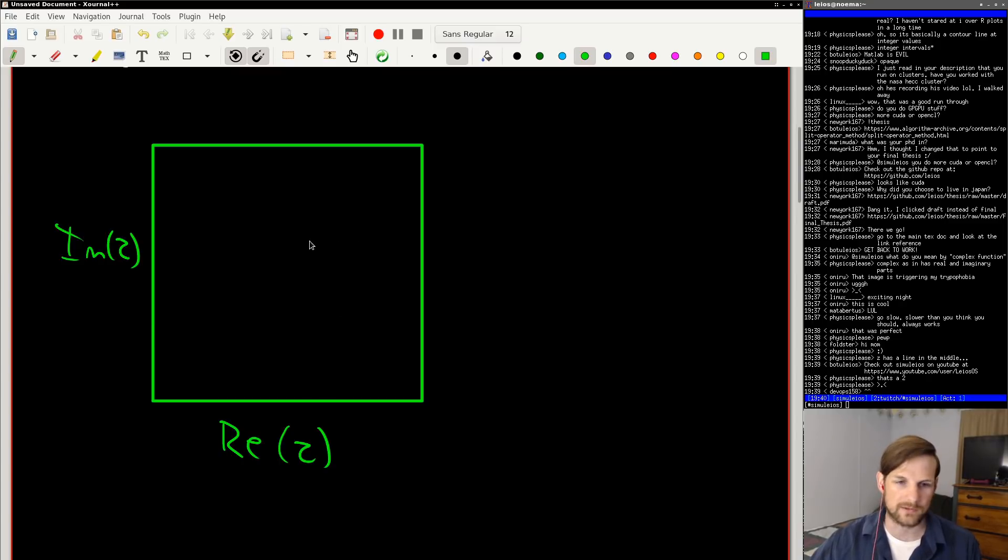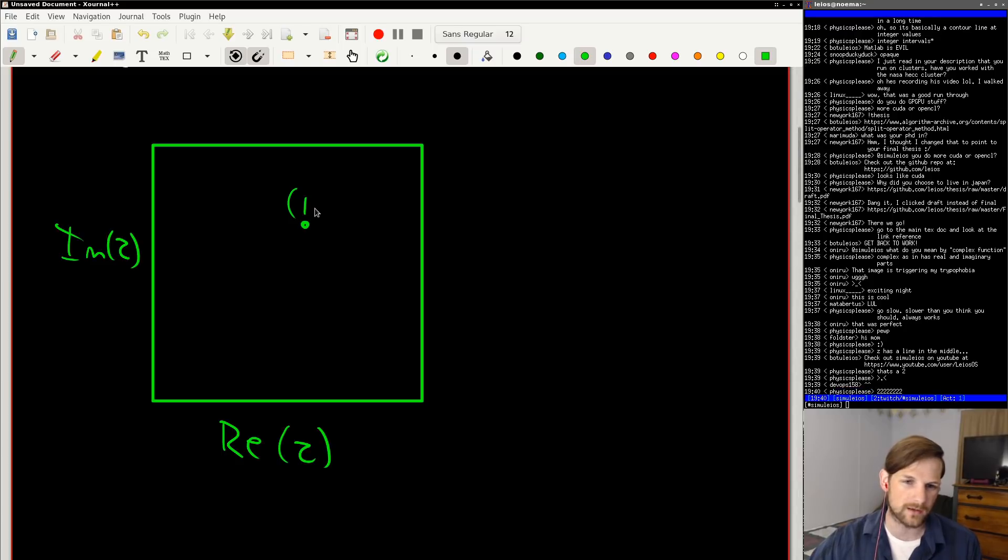Then we select some pixel. Any pixel really will work but we'll choose this one right here which we'll say is just 1+1i. We're going to plug that pixel into our function, again f(z) = z, and we're going to get some sort of output variable. Again we know the output variable is z so I'm just going to write it here.